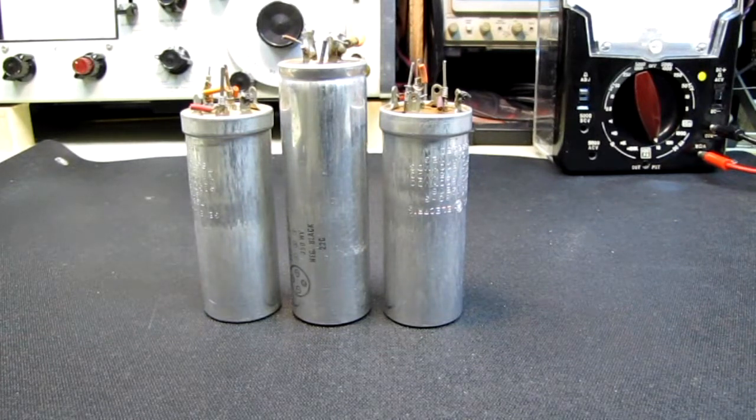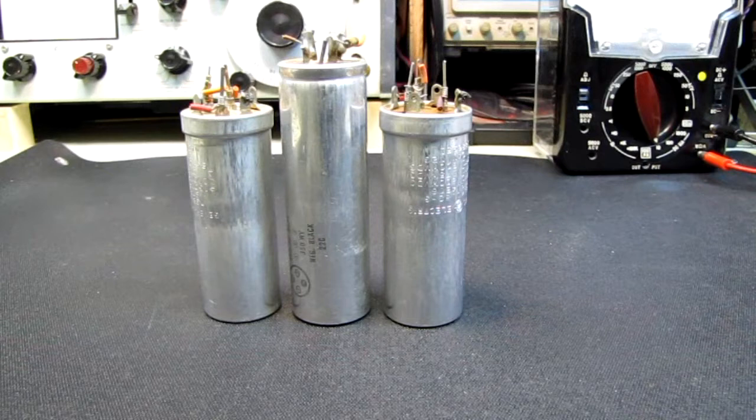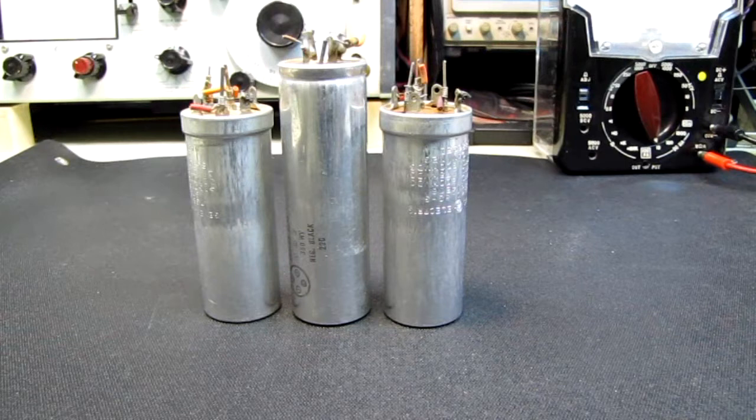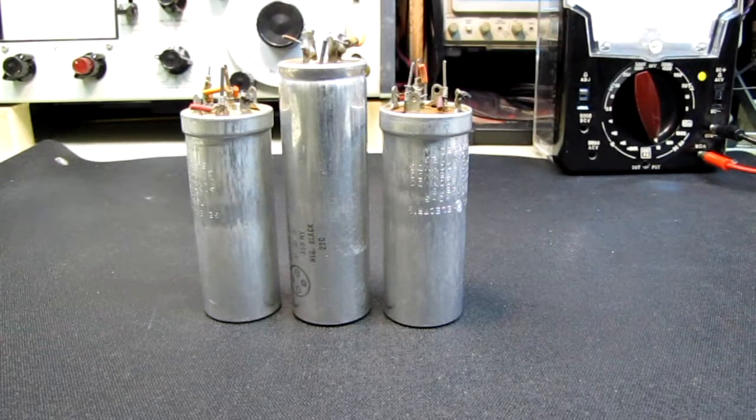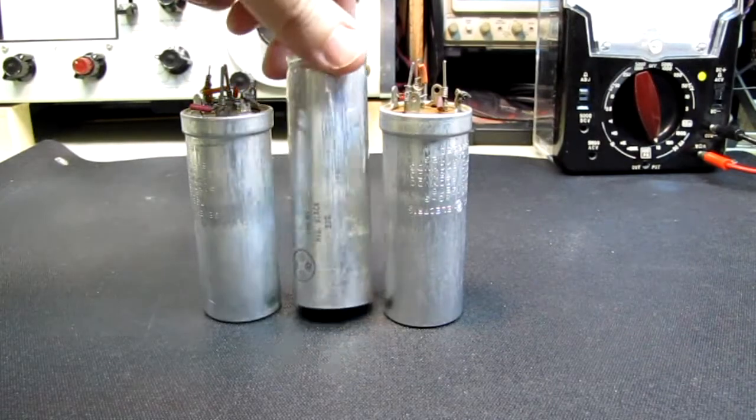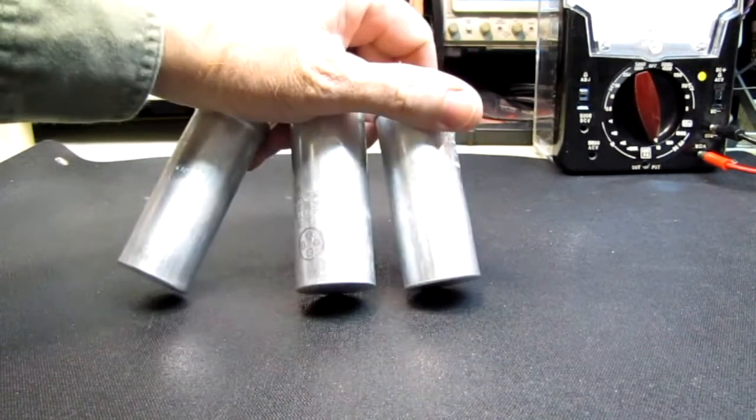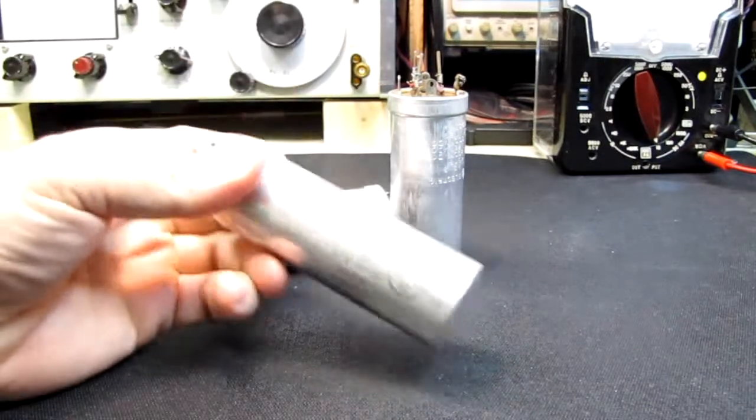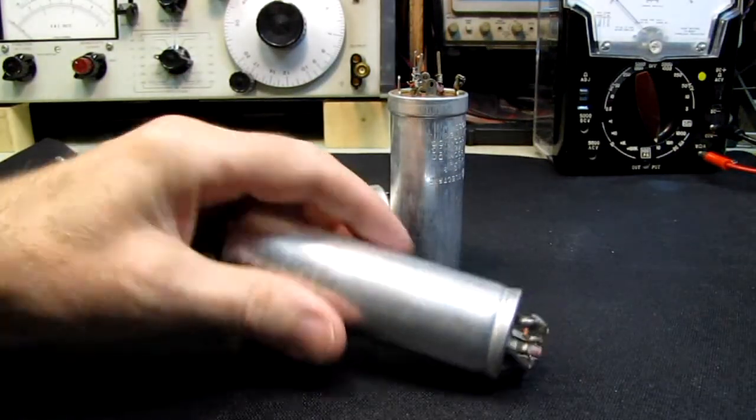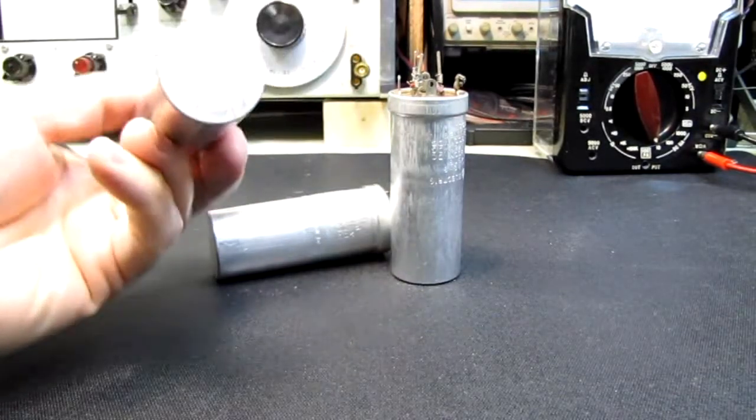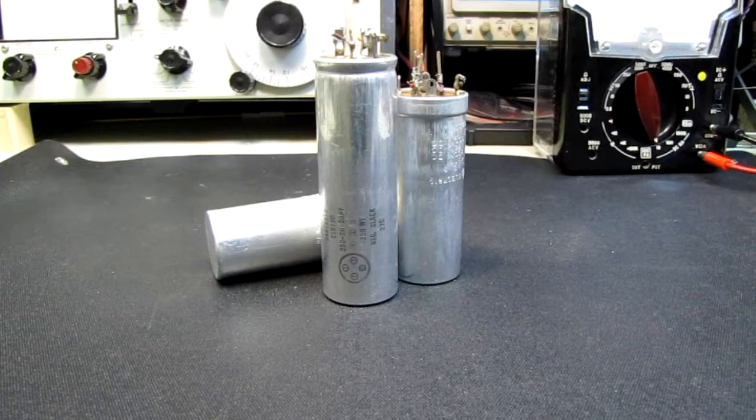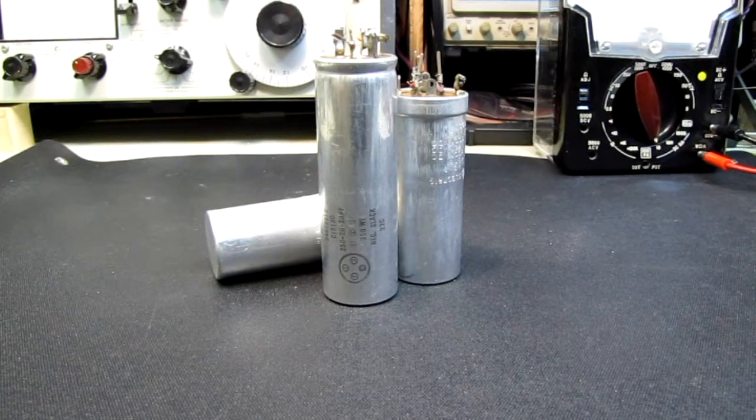And as sure as there's ticks in New Hampshire in the springtime, a friend of mine calls me up this morning and says, do you have any 250 microfarad 300 volt capacitors? Well I sure do. I have a bunch of capacitors in my junk box, and this one here actually is a 250 plus 20 plus 20 at 350 working volts. But it's probably been in my junk box for some 30 odd years, just sitting there doing nothing.